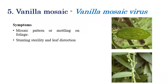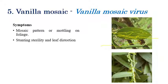Vanilla Mosaic Virus symptoms include mosaic patterns and mottling of foliage. Mosaic pattern and mottling of foliage can be clearly seen, with the foliage completely mottled. Sterility and leaf distortion can also be observed.